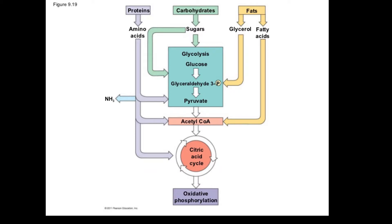For example, glucose isn't common in the human diet — we tend to eat sugars like fructose or sucrose. What we need to do is just break the nutrient molecule down to its monomer or building block and feed that into something like the bridge, the Krebs cycle, or glycolysis.